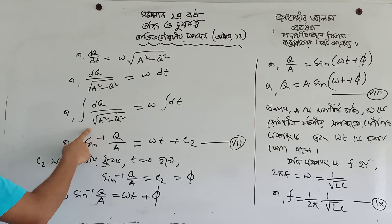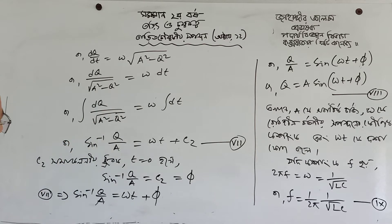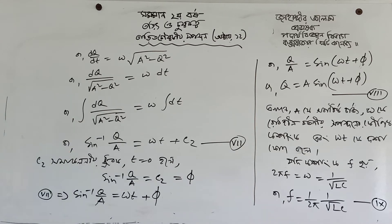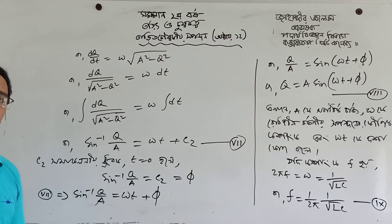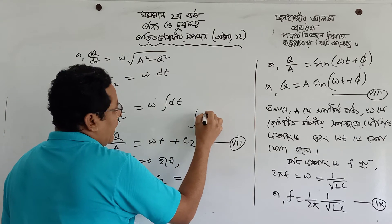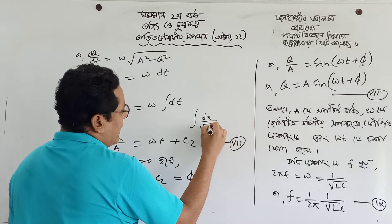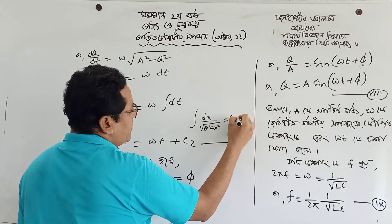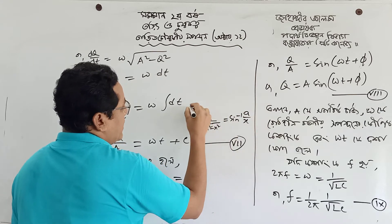Integration dq by square root of s² minus q², equal omega. Integration dq: one by s times square root of s² minus x², dx. Integration dx by square root of s² minus x² equals x by a, sine inverse y over x.